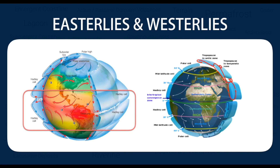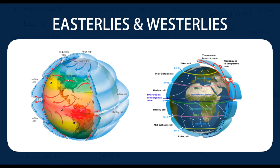The result is that between 30 degrees north latitude and 30 degrees south latitude, winds usually blow from the east towards the west. This wind is usually called the trade winds or easterlies. In the northern hemisphere, it is called north easterly trade winds, whereas in the southern hemisphere, it is called south easterly trade winds.